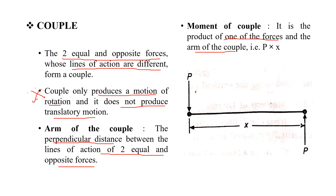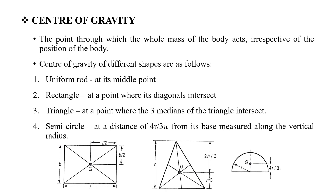The centre of gravity is the point of a body where the entire weight of the body is assumed to act. Where is the centre of gravity? The first one is the uniform rod — the centre of gravity is at the midpoint. The next one is the rectangle — the centre of gravity is at the intersection of the diagonals.